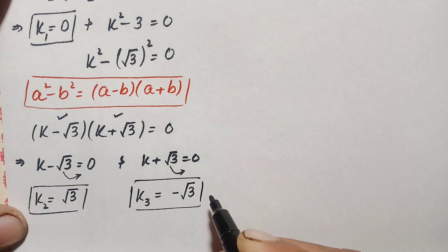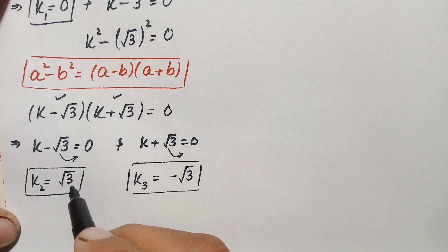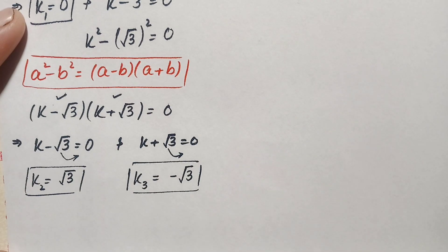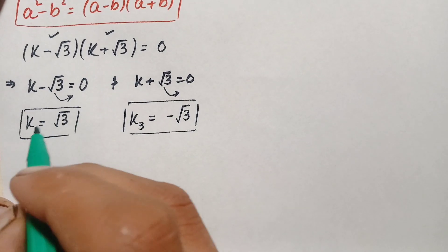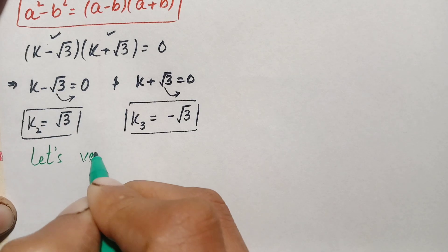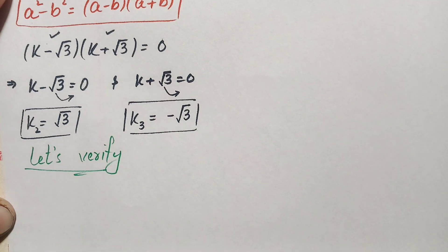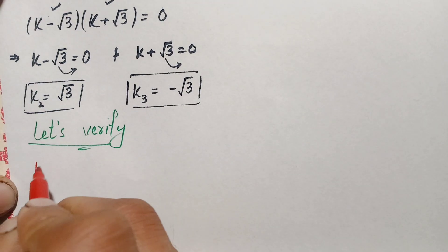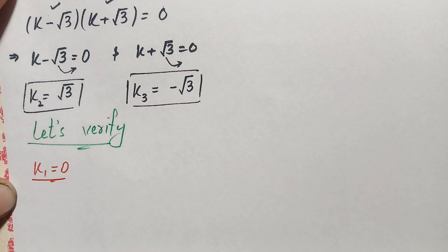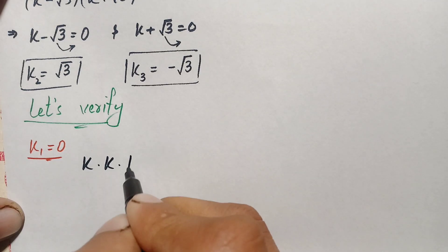So we have three possible solutions: k₁ equals zero, k₂ equals √3, and k₃ equals negative √3. Now we will verify each solution. Let's verify k₁ equals zero by substituting into the original problem k times k times k equals k plus k plus k.